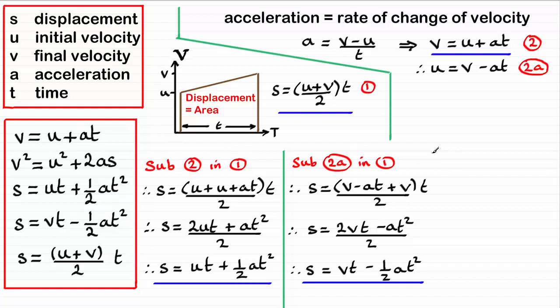So, just got to get one more equation. And you most probably can guess what I'm going to do here. What I'm going to do is take this equation here and now make t the subject. If I do that, we end up with t equaling v minus u. And that's all divided by a. And I'm going to call that equation 2b.